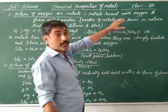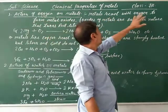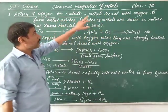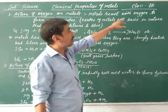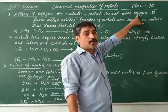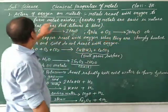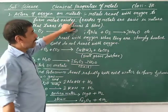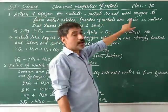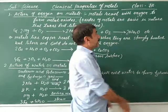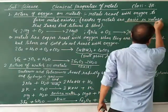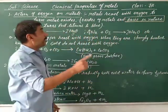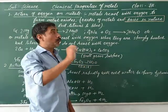The metals react with oxygen to form metal oxide. The oxide of metals are basic in nature — it means it turns red litmus to blue.